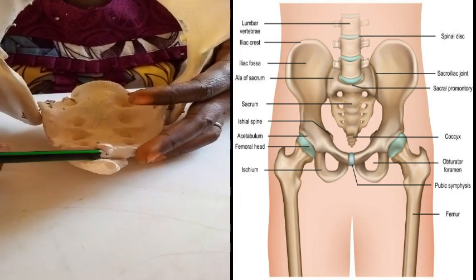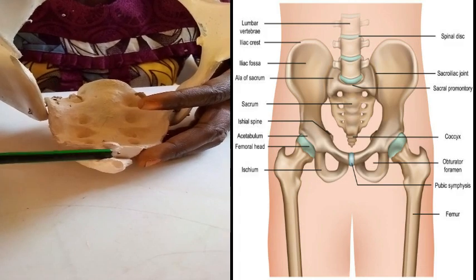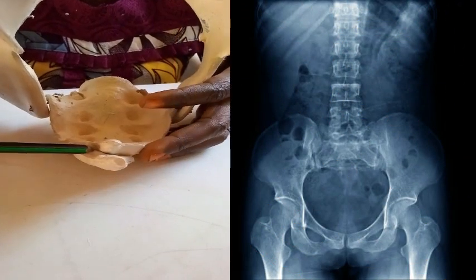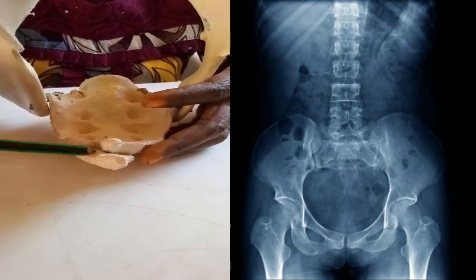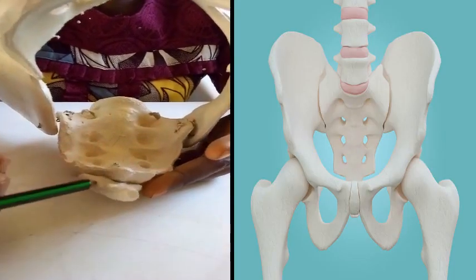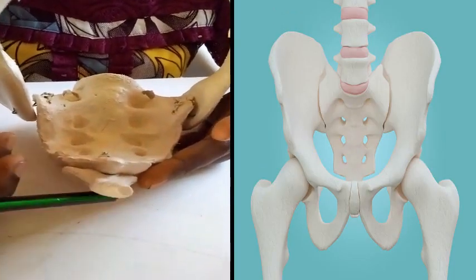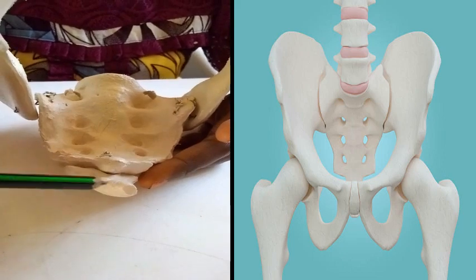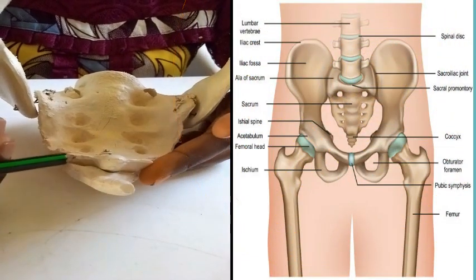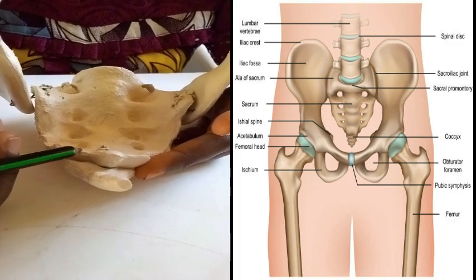The coccyx is a vestigial tail consisting of four fused vertebrae, forming a small triangular bone. It articulates with the sacrum superiorly.